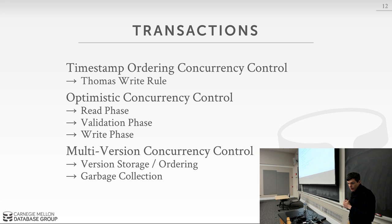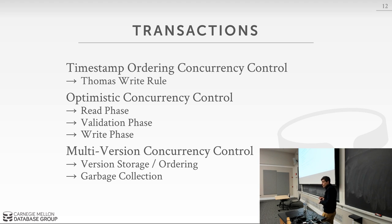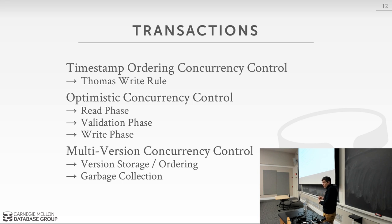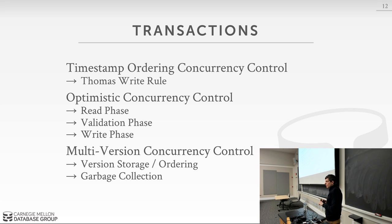We spent more time talking about timestamp ordering and optimistic concurrency control protocols. For the basic timestamp ordering protocol, understand how it works and how you can apply the Thomas Write Rule to ignore writes from transactions that would otherwise abort. Understand the three different phases in OCC and what it means to have a private workspace. How does this relate to multi-version concurrency control? How do you store and order different versions, and how does it affect indexes and garbage collection?